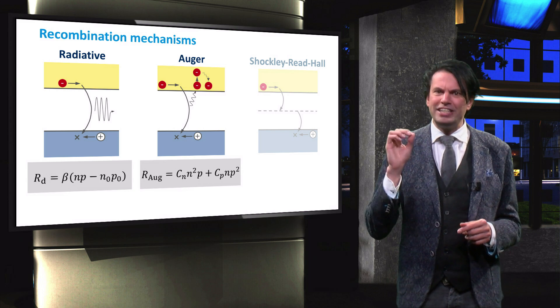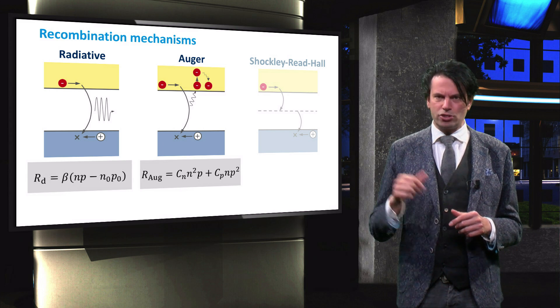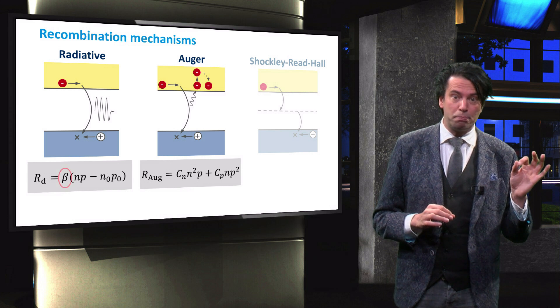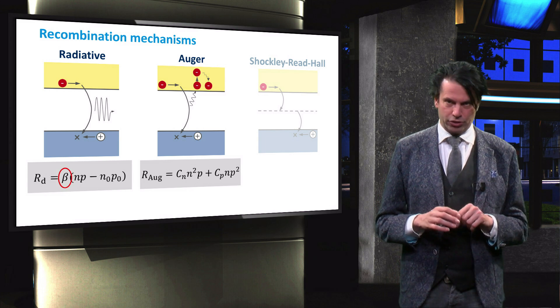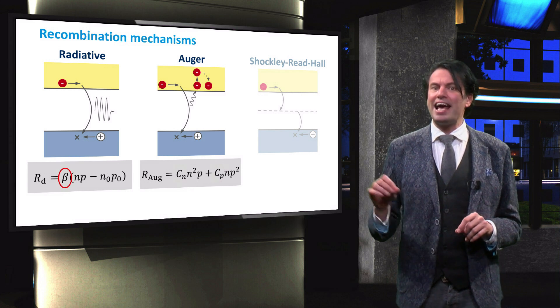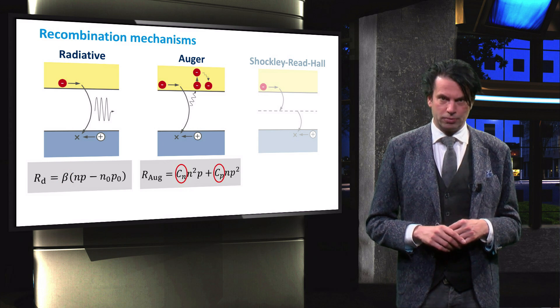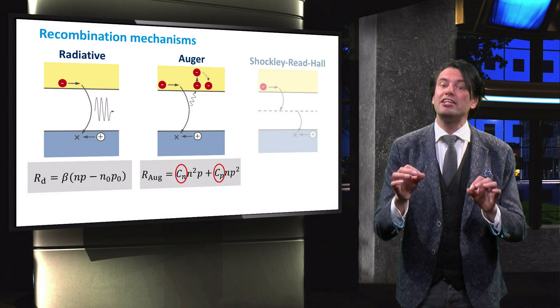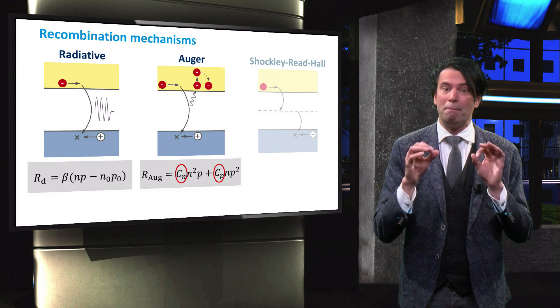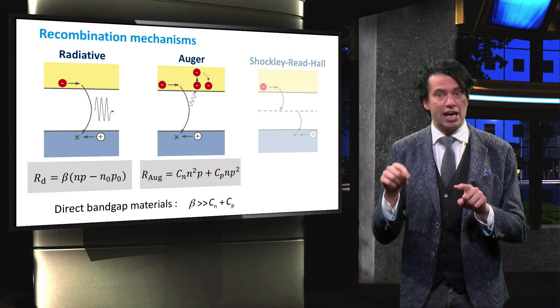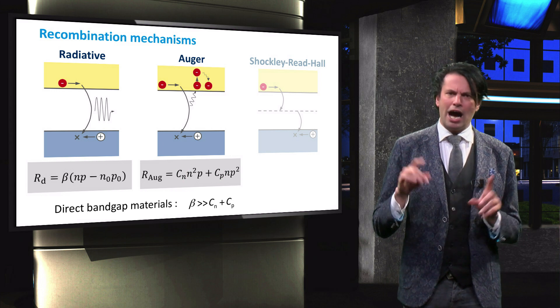We are left with radiative and Auger recombination. The recombination rate of these mechanisms are given by these equations where β is a material-dependent radiative recombination constant. Cn and Cp are material-dependent Auger recombination constants. In a direct band gap material, radiative recombination is dominant and β is much greater than the Cn and Cp values.